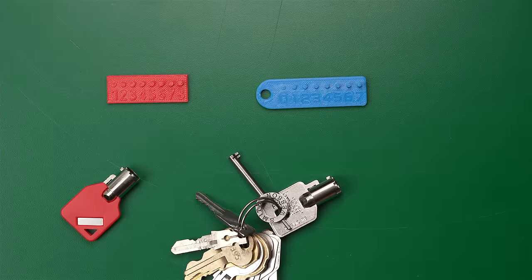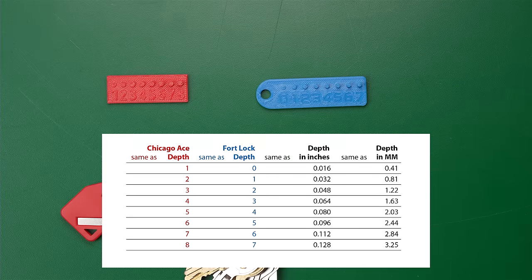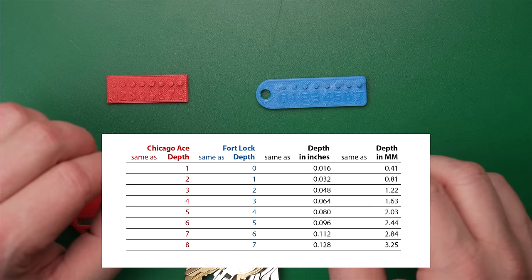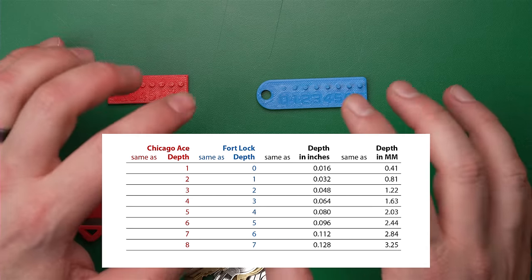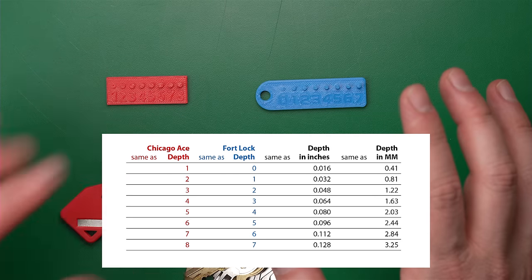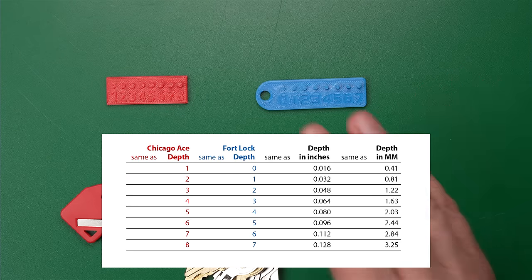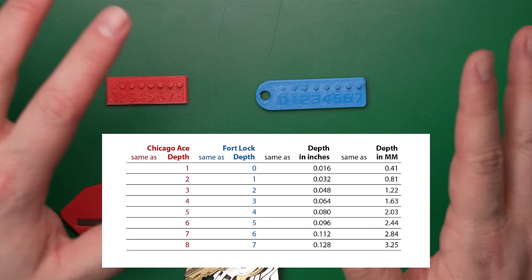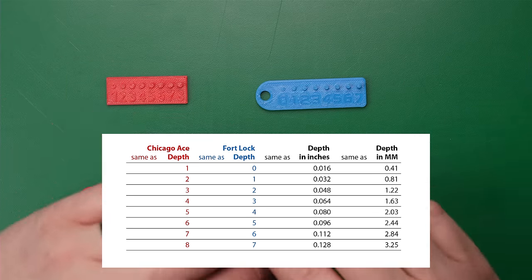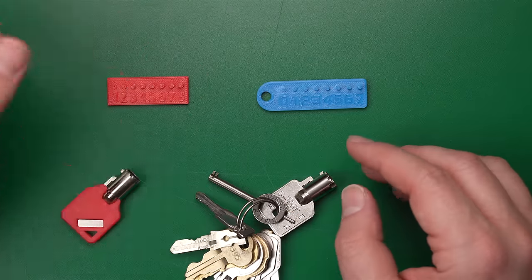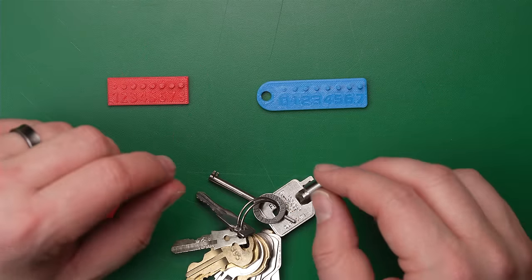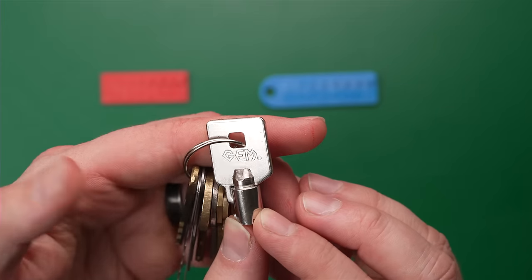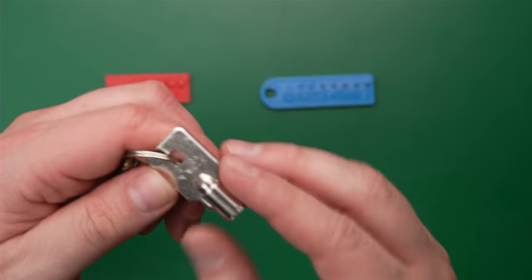Let me throw a little chart on the screen for you here. So the original tubular keys, the original tubular locks, the Chicago lock system, as it was called. Chicago Lock Company made the ACE lock. And that ACE lock had bidding values that could be expressed from 1 through 8, from very shallow cut to very deep cut. And that was the standard for a very long time. But Chicago Lock Company is gone. They've been absorbed into Compex.